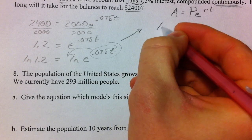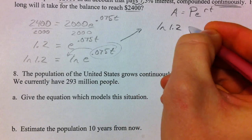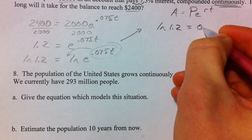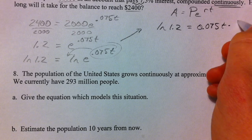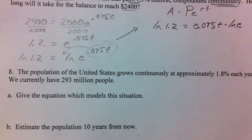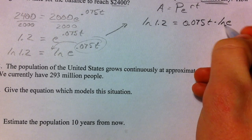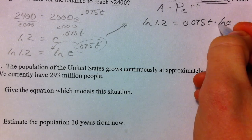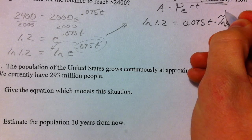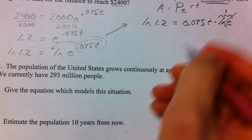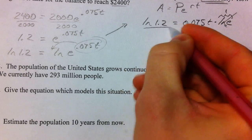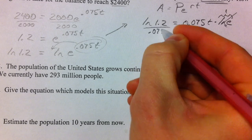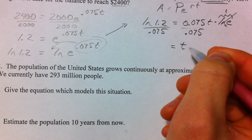Let's move up over here. Natural log of 1.2 equals what we brought down in front, 0.075T times the natural log of E. Natural log of E is 1. That's equal to 1. It cancels out. Now, all you have to do is divide by 0.075.